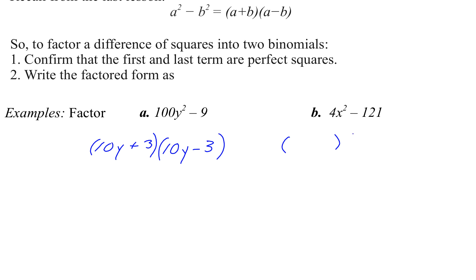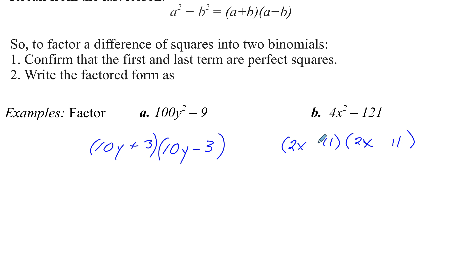Over on letter b, do we have two perfect squares? Yes, we do. 4x² — the square root gives us 2x. And the square root of 121 is 11. Hopefully you recognize that; if not, you can use your calculator. And the signs are opposite: one is plus and one is minus.